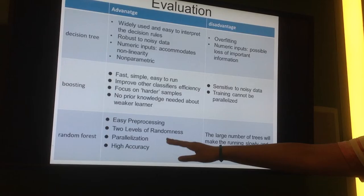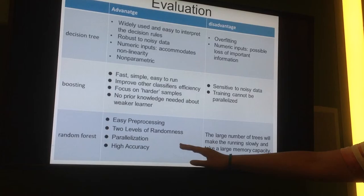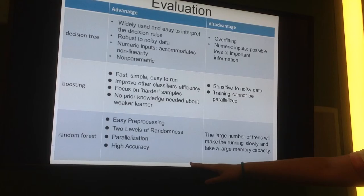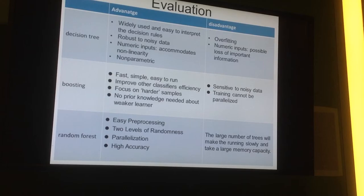The last one is the random forest. The advantage of it is it is easy for processing. And it uses two levels of randomness, is parallelizable, and has high accuracy. The disadvantage of random forest is the large number of trees make the algorithm run slowly and take a large amount of memory capacity.